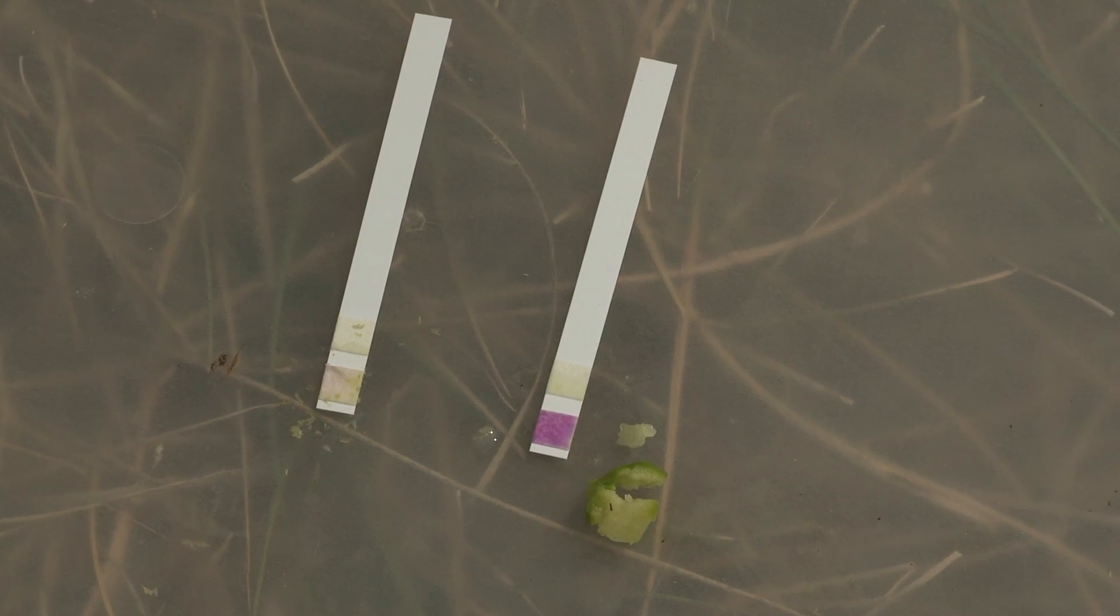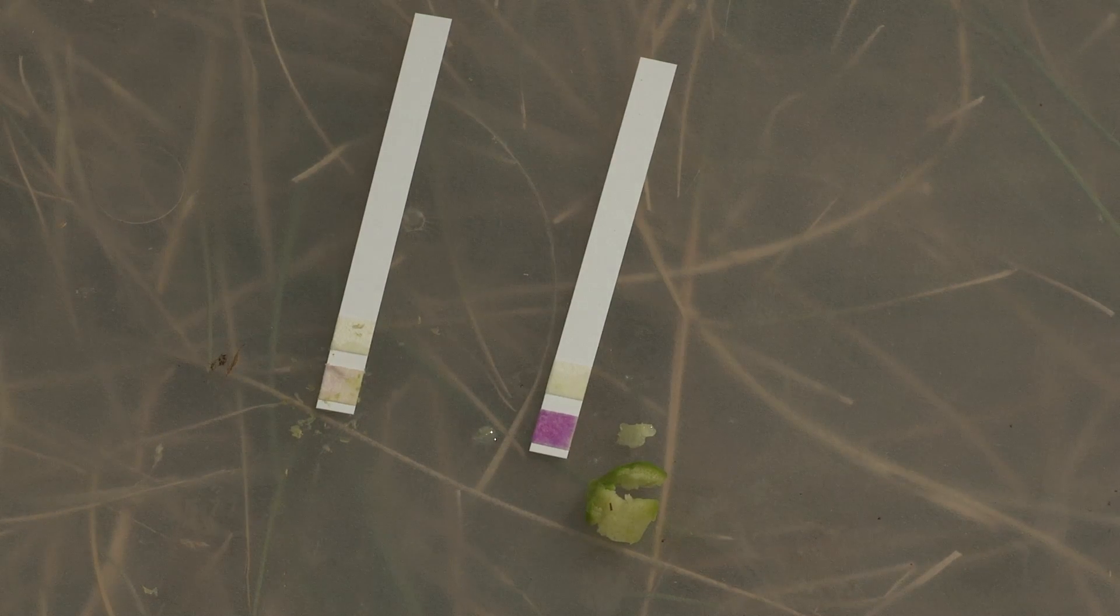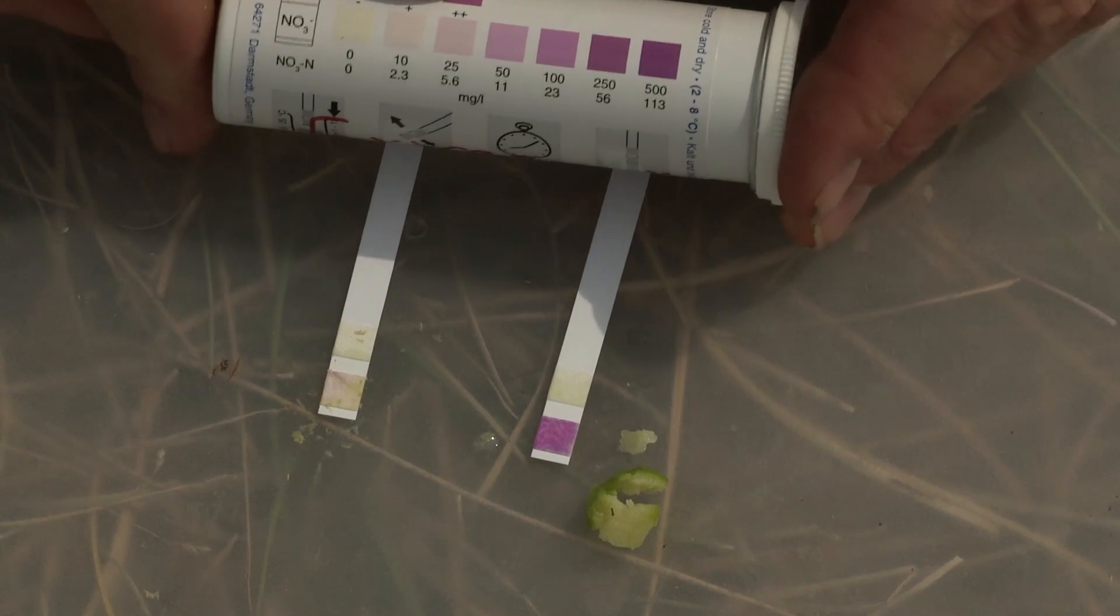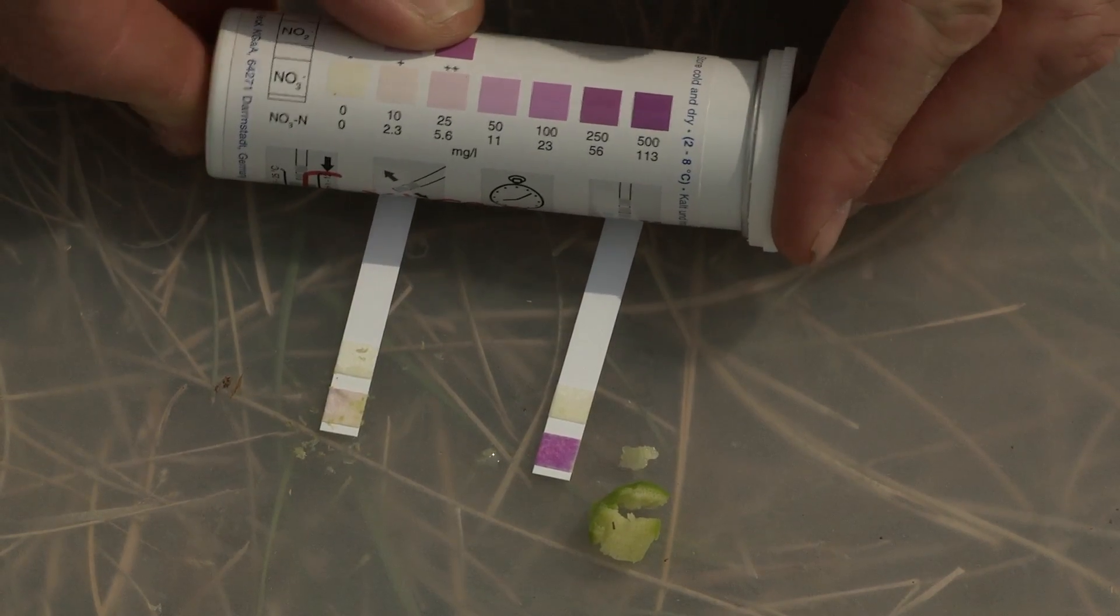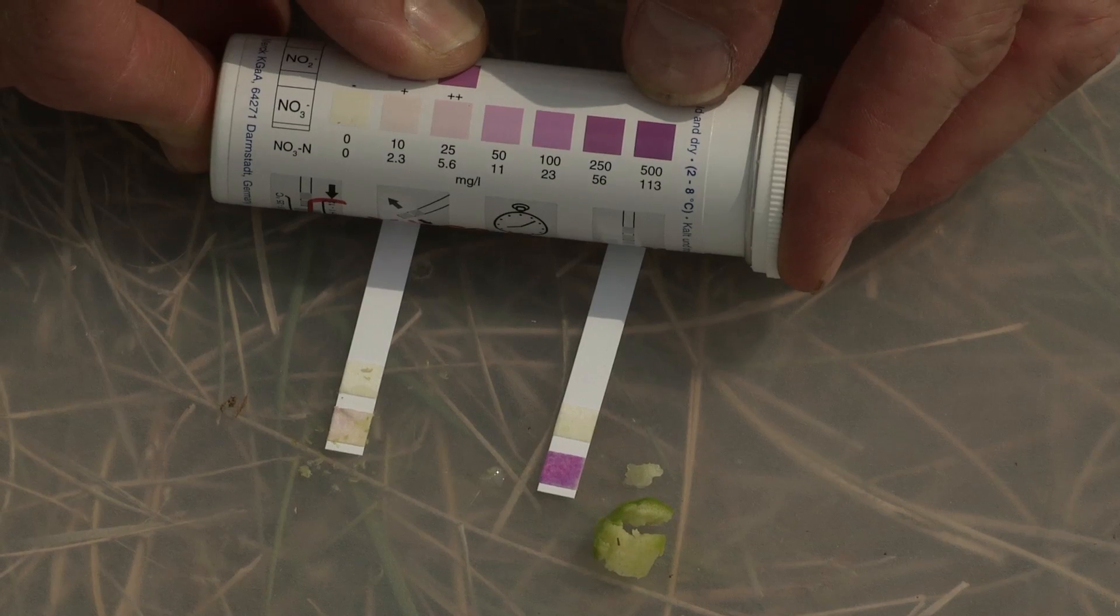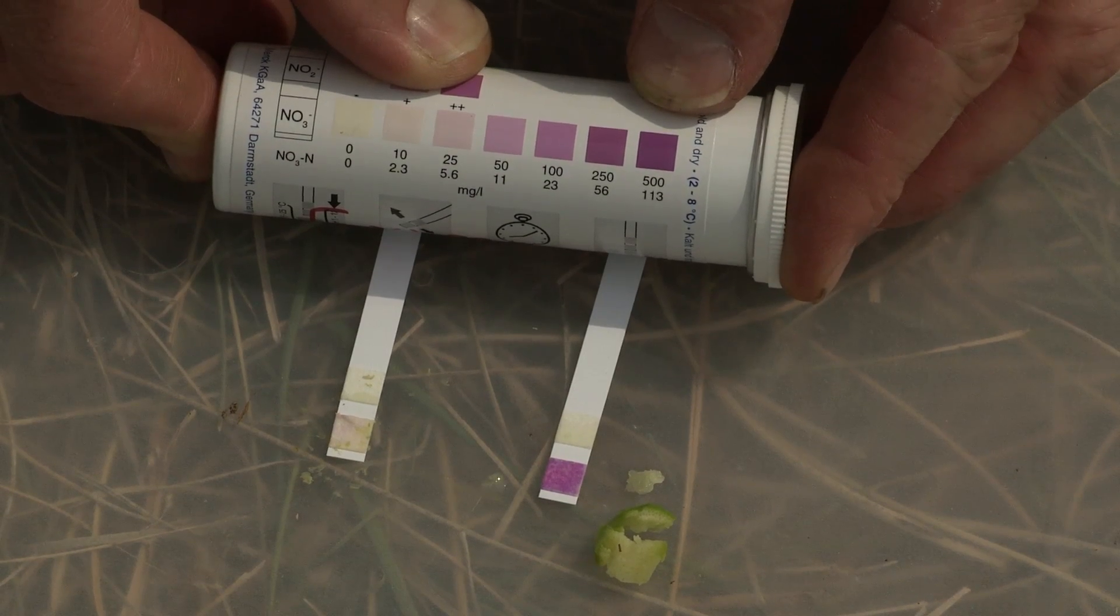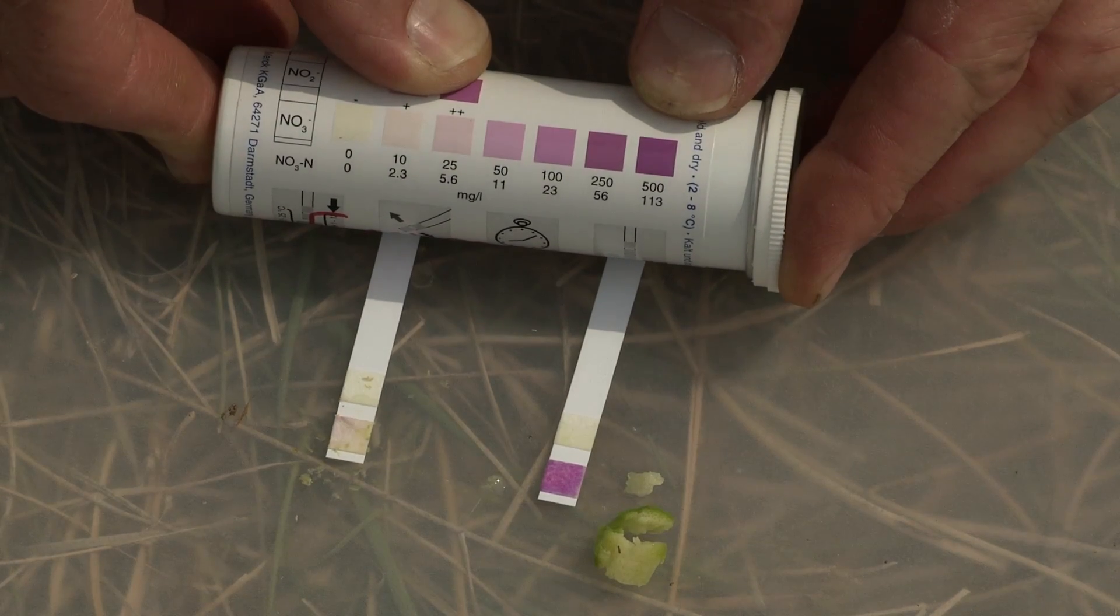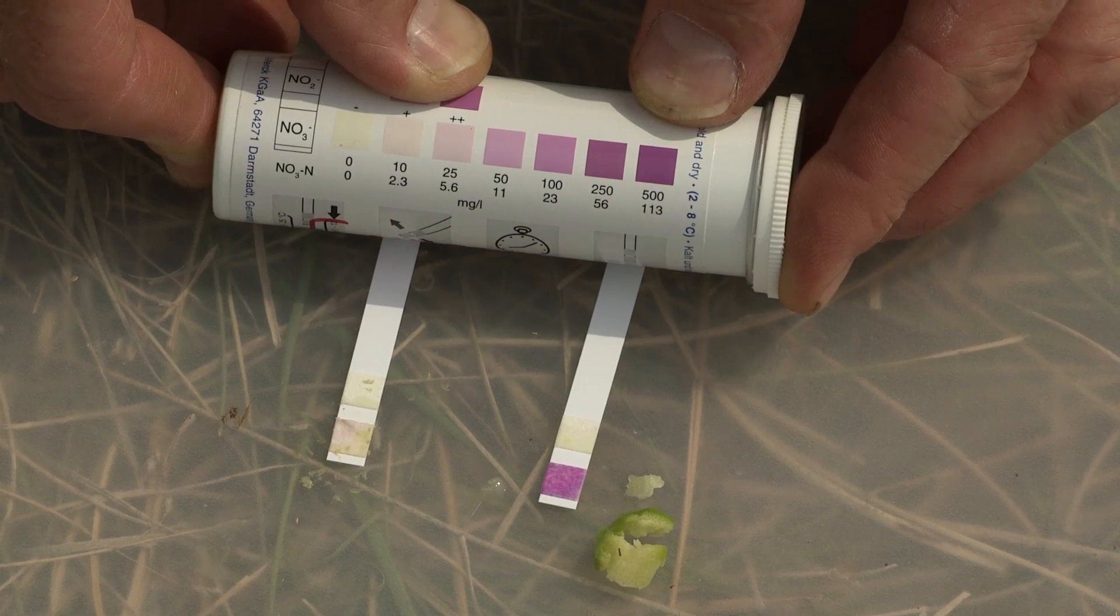With the sorghum, we're seeing a rapid color change. On the vial that these come in, we have a range of colors, and if it goes to this 500 parts per million, this darkest color, within a minute, we know that it's at a potentially toxic level for animals.